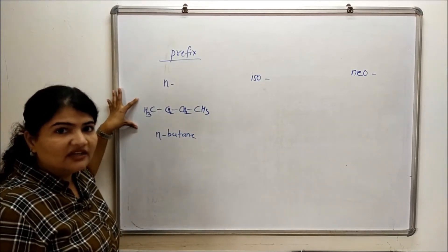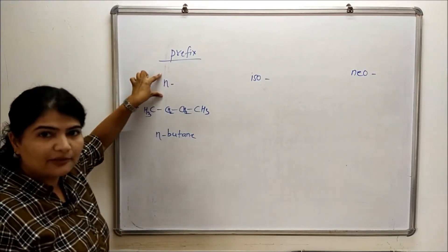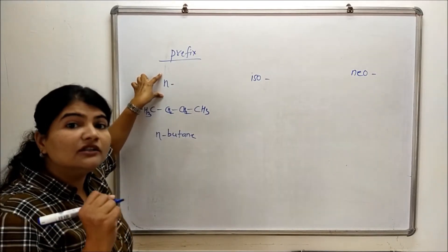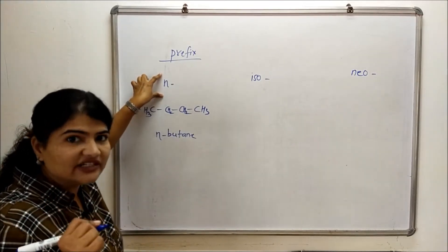For continuous chain or straight chain, we will be using the prefix n. N is for normal chain or straight chain compounds.